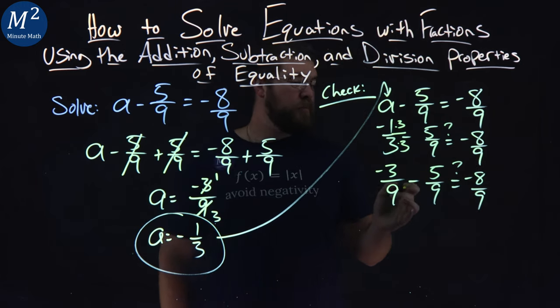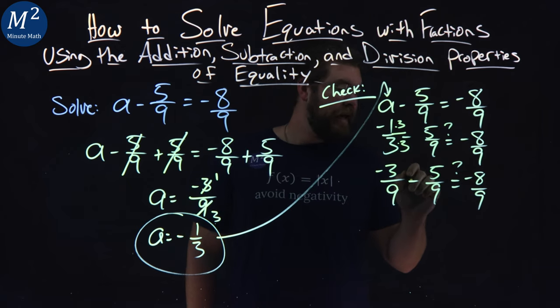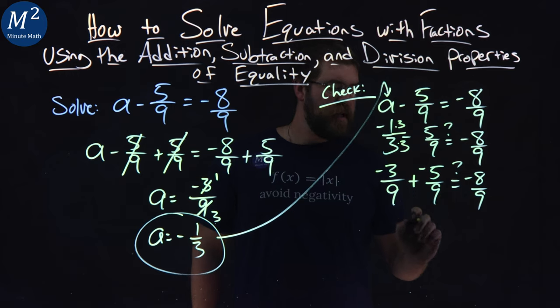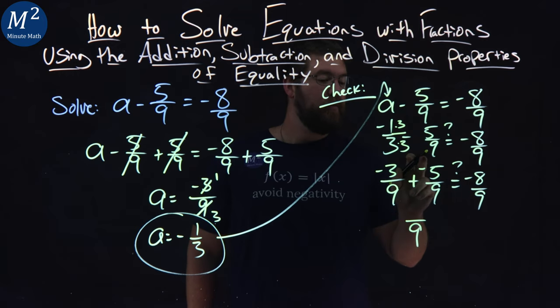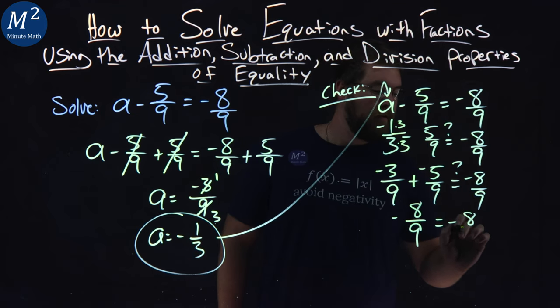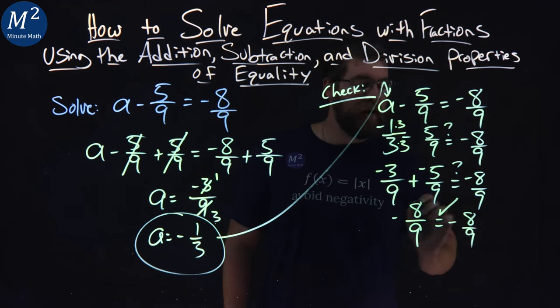From there, I'm subtracting fractions, or I can add the negative. I prefer that. 9 is the denominator, keep the 9 down here. And negative 3 plus negative 5 is negative 8. And negative 8/9 clearly equals negative 8/9.